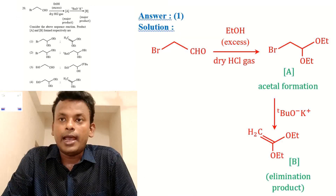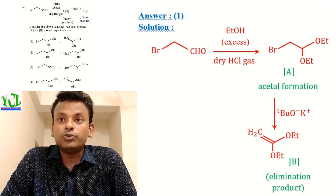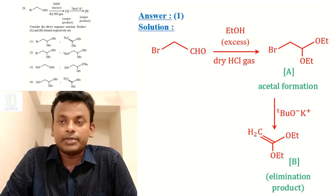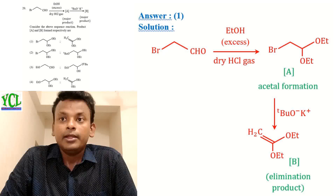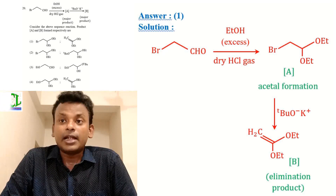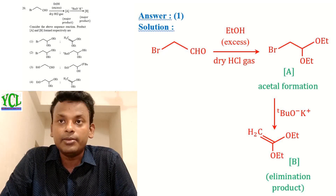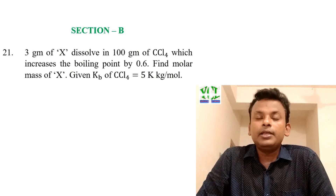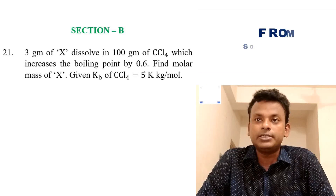Question 20: Consider the sequence of reactions; products A and B formed respectively. The answer is option 1. First, an aldehyde reacts with ethanol in dry conditions to form a hemiacetal, then a full acetal with two ethoxy groups added. Next, tertiary butyl potassium tert-butoxide causes an elimination reaction to give the product. So option 1 is correct.